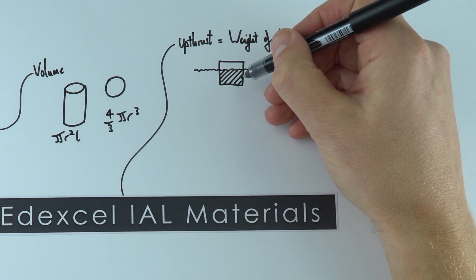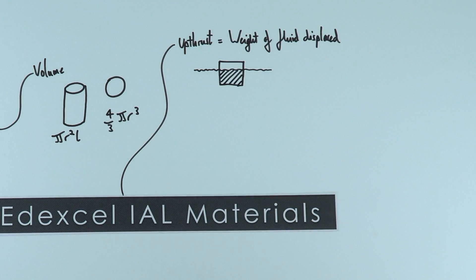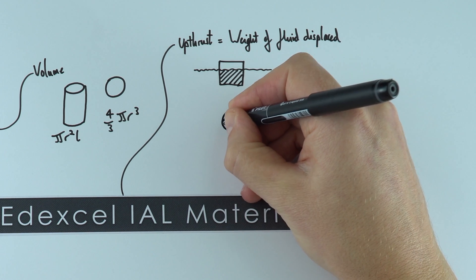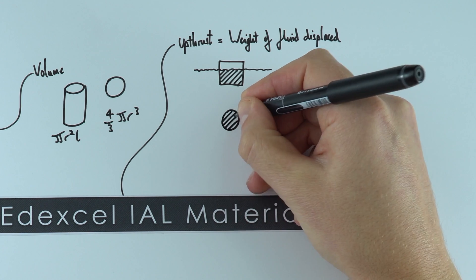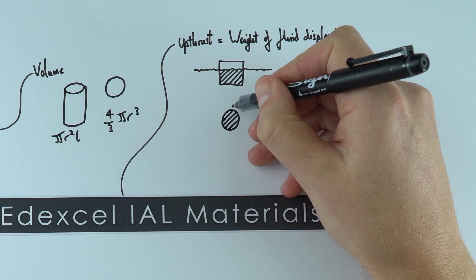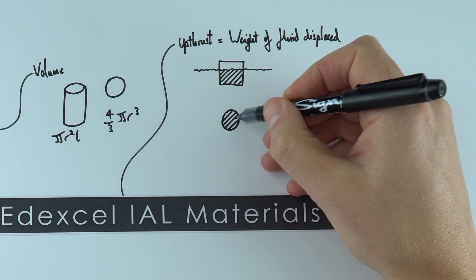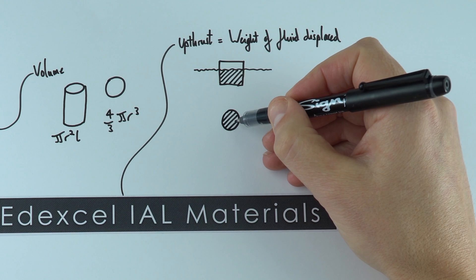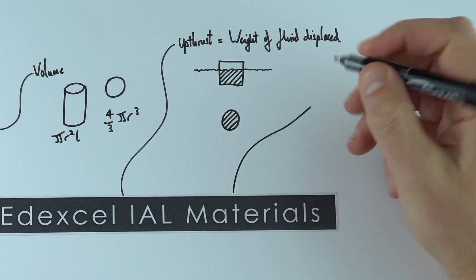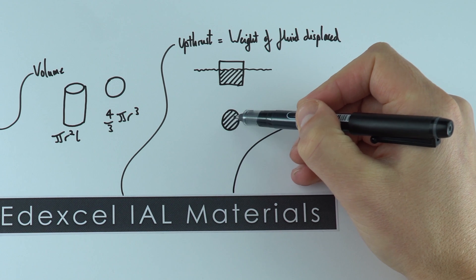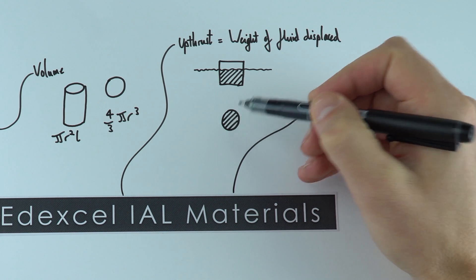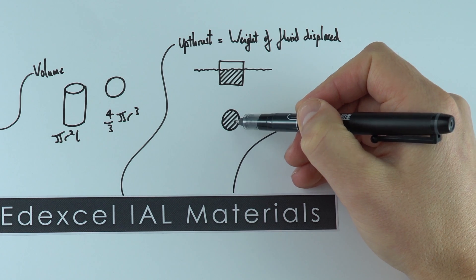This provides a buoyancy force in the upwards direction. We might also have an object which is completely submerged — it's got a weight force acting down, but the upthrust is going to be equal to the weight of fluid displaced by that object. This leads nicely on to what happens if you had an object falling or moving through a fluid and what the size of the forces involved would be.